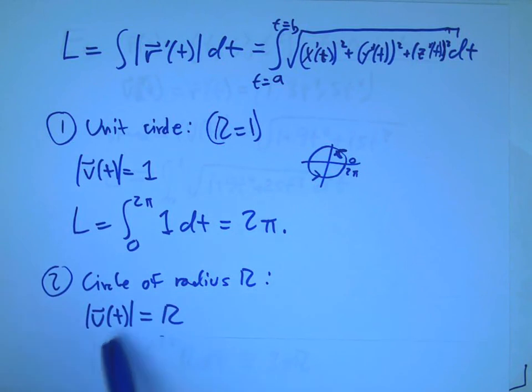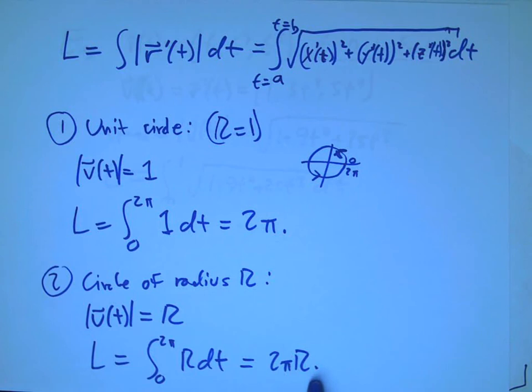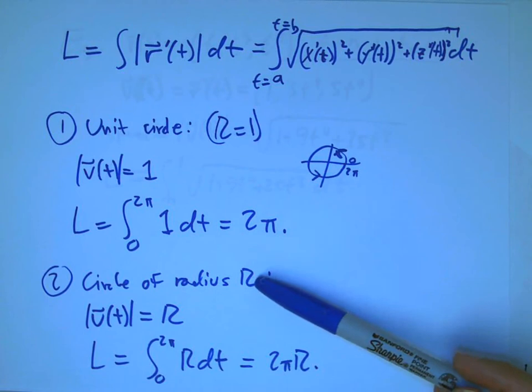Circle of radius r. Just a little bit more complicated. We already calculated that the magnitude of the velocity was equal to r. And so the length now is going to be integral from 0 to 2π of r dt, which is 2πr.